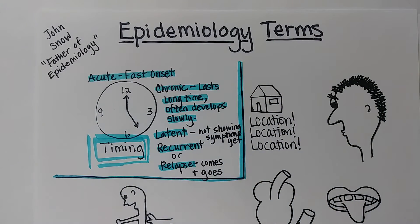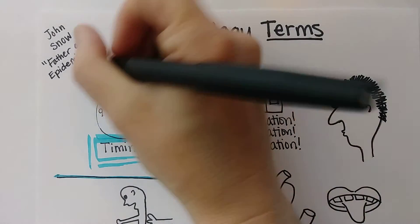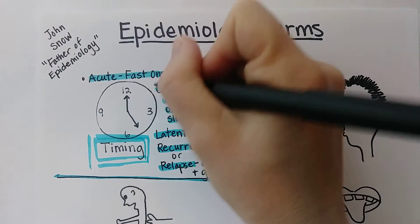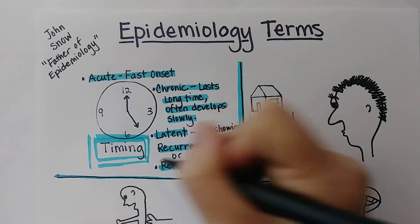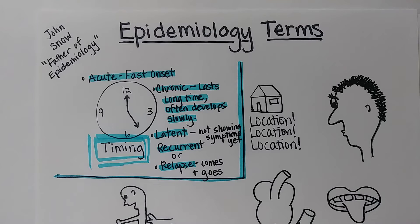So the timing terms are: acute, chronic, latent, and relapse.